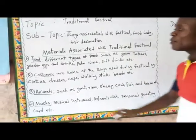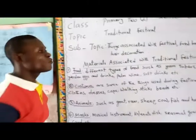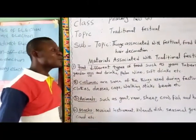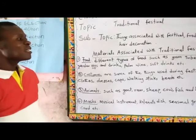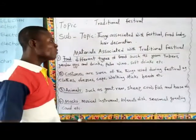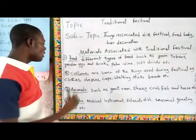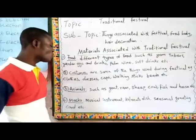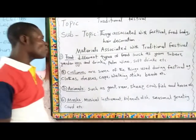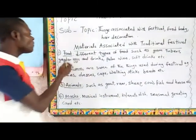Let's go with number one. Number one is food. I may ask you — can you name two or three things, materials that are associated with festival? You can say food, you can say animal, or you can say mask, etc. We have so many others. So let's go to number one: food.